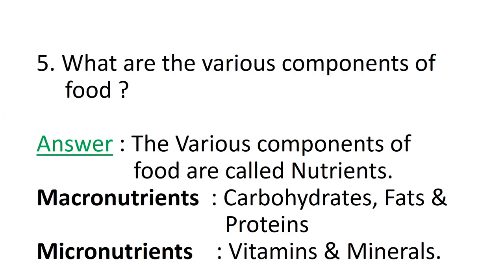Question number 5: What are the various components of food? The various components of food are called nutrients. All nutrients are divided into two categories: micronutrients and macronutrients. Micronutrients are required in small amounts by our body, whereas macronutrients are required in large amounts. Macronutrients include carbohydrates, fats, and proteins; micronutrients include vitamins and minerals.